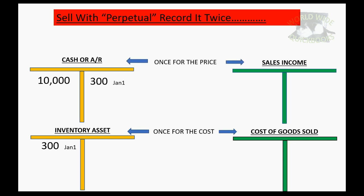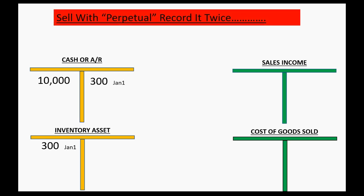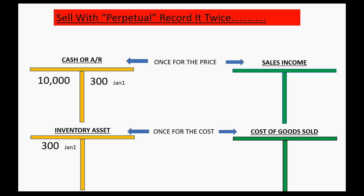That's a lovely little rhyme, so let's say it again: When we sell with perpetual, we record it twice — once for the cost and once for the price.